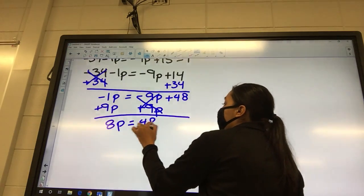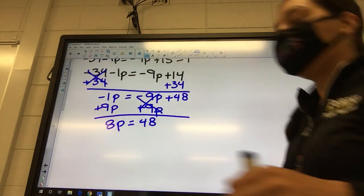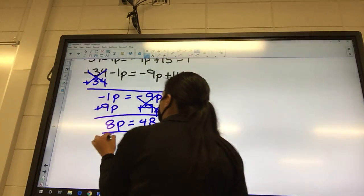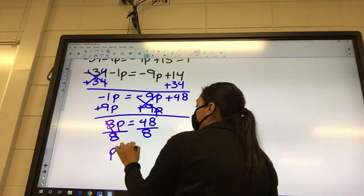And what's my last step, always? Divide by eight. So p equals six.